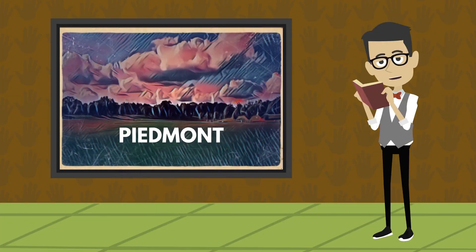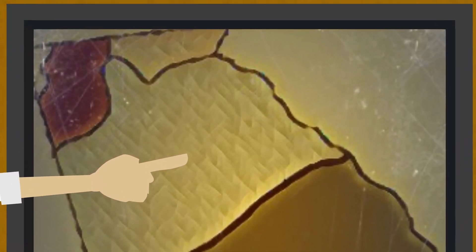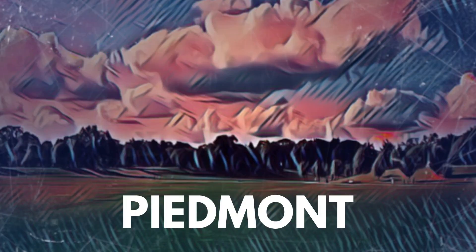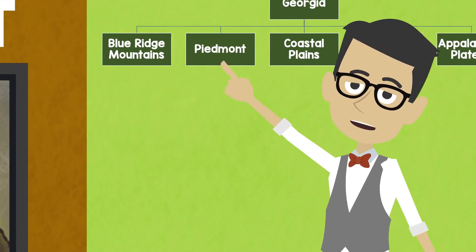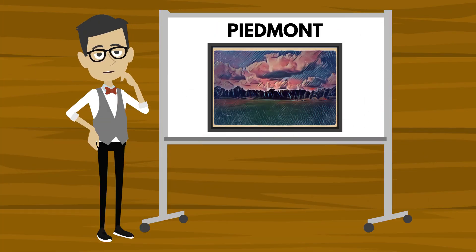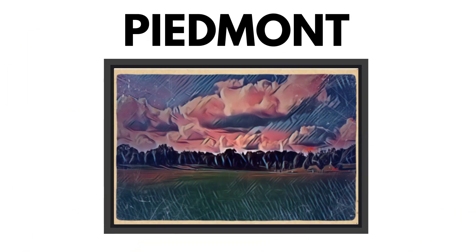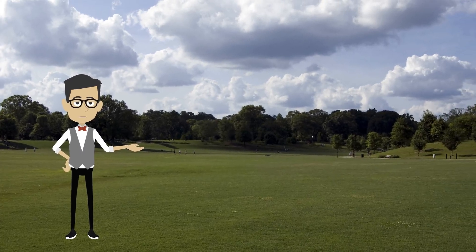The Piedmont is a Georgia geographical region that lies between the Blue Ridge Mountains and the upper coastal plain. It is part of a larger area called the Southern Piedmont, located in the southeastern and mid-Atlantic regions of the United States. It is about 870 miles long and 60 to 190 miles wide, running in a northeast to southwest direction through Alabama, Georgia, South Carolina, and North Carolina. The actual meaning of the word Piedmont is foot of the mountain. The city of Atlanta, the state capital of Georgia, is located in the Piedmont region.